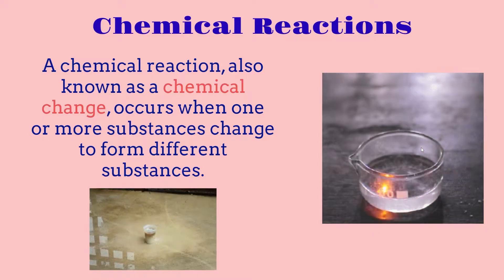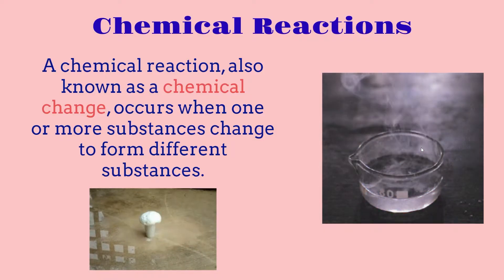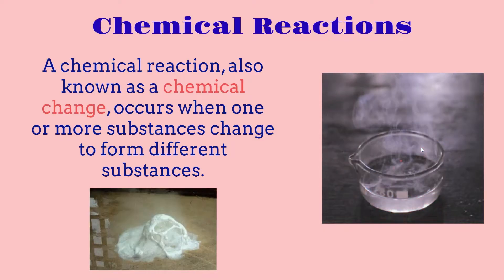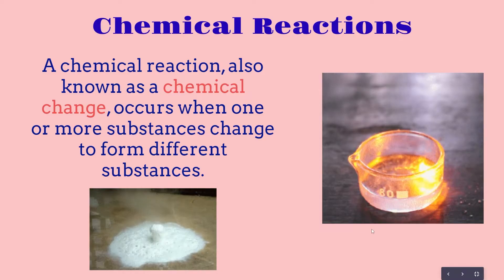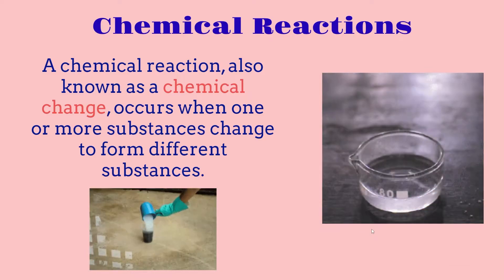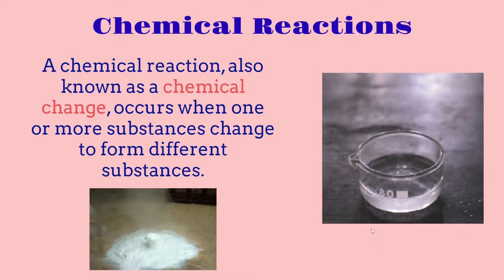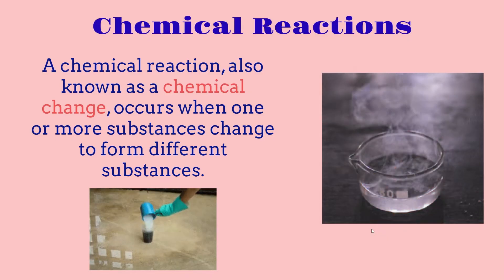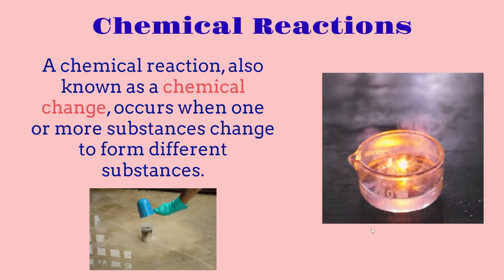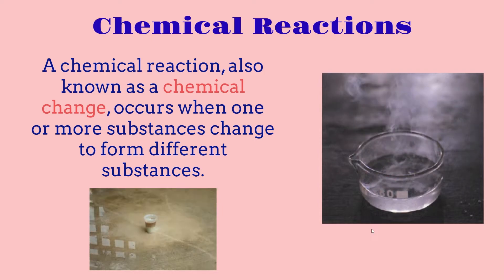For example, in the bottom picture here, we can see that once another element is added to one other element, there is a substance change — a different form of substances is created. And the same thing happens in the picture on the right: when something else is added, for example flames to a liquid, a new substance is formed. In summary, a chemical reaction is when one or more substances are used to form different substances.